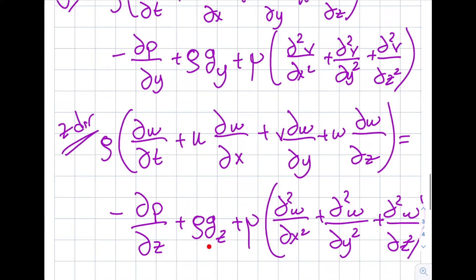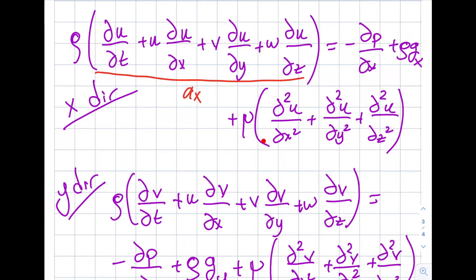It's rare that gravity won't align with one of your axes, so typically two gravity components are zero and one will be −9.8 m/s² (SI) or −32.2 ft/s² (US customary). If viscosity is zero, the viscous term drops out and this first equation reduces exactly to Euler's equation from Video 9.2. The only mathematical difference between the Navier-Stokes equations and Euler's equations is that viscous term.